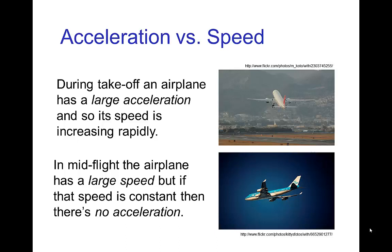Let's think about this example: an airplane is taking off. It starts on the runway and picks up speed, and during takeoff it has a large acceleration because the speed is increasing rapidly. Now, in mid-flight when the airplane is going at a constant speed, that speed may be quite large, but because the speed is constant, there's no acceleration. So acceleration is really related to the change in speed.